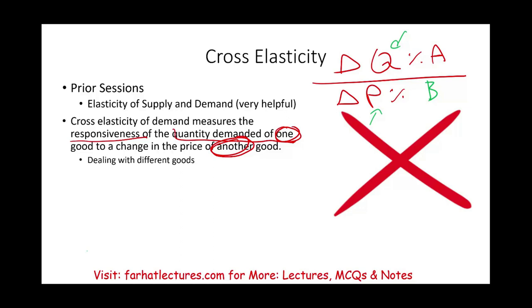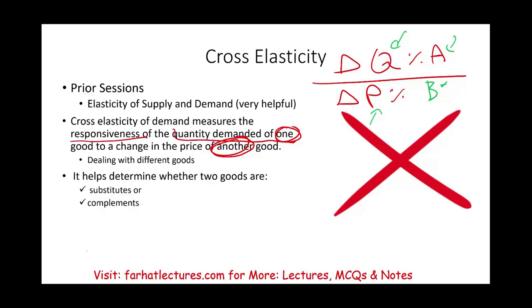What's the purpose of cross-elasticity? It's going to help us determine whether two goods, A and B, can be considered substitutes or complements in the eyes of the consumer. A substitute is when the consumer has two options — like Pepsi and Coke, the classic example. If you don't want Pepsi, you have Coke. A complement — think of a burger and a bun. You need the meat and the bun together to make a hamburger; they complement each other.